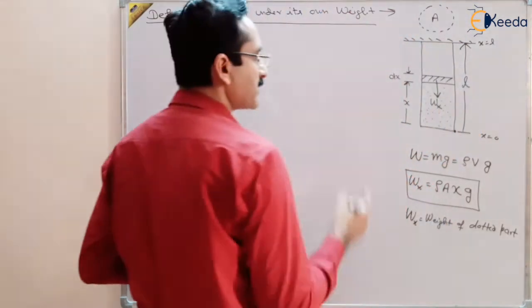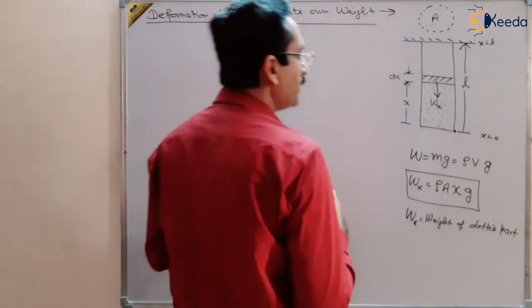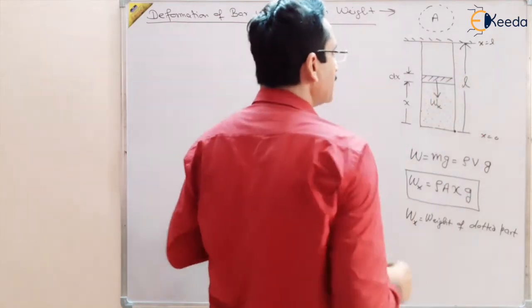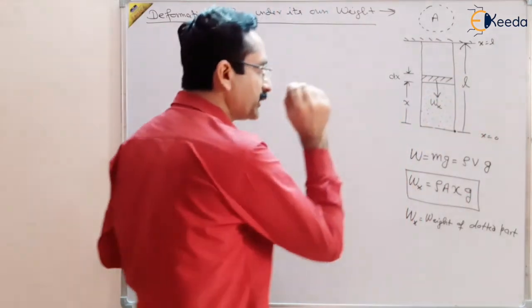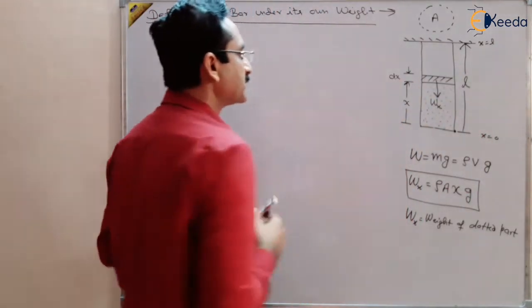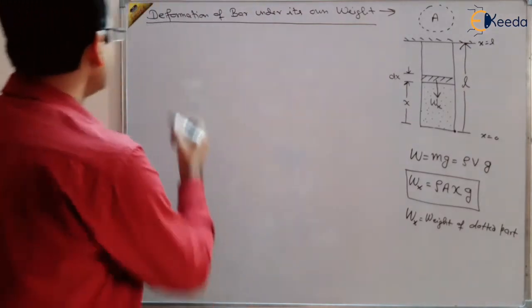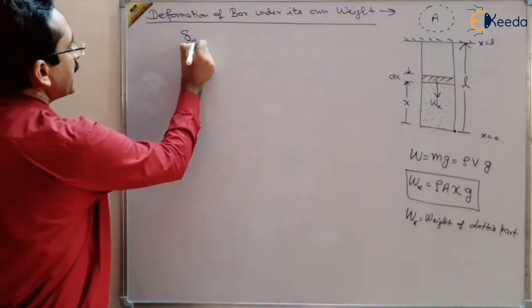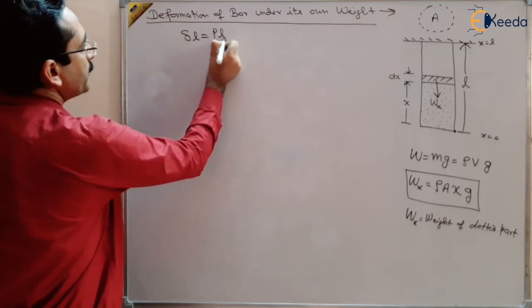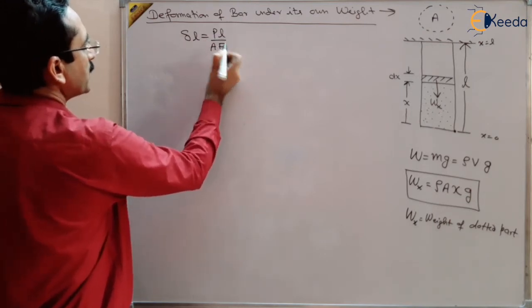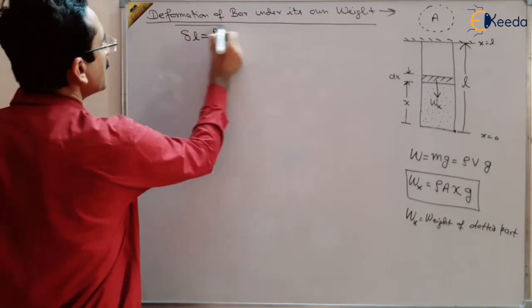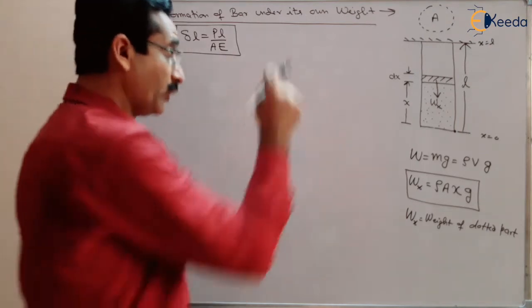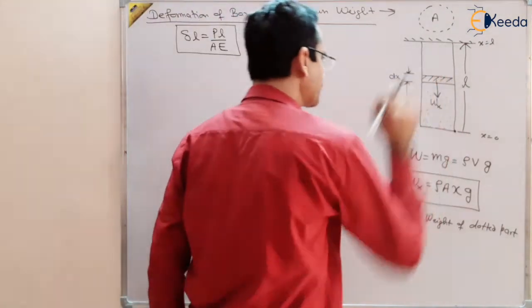This weight wx is trying to elongate the small element dx, so there will be a small deformation in dx. We know from the basic formula that deformation δl = PL / AE. We will utilize this formula to find the small deformation in the element dx.